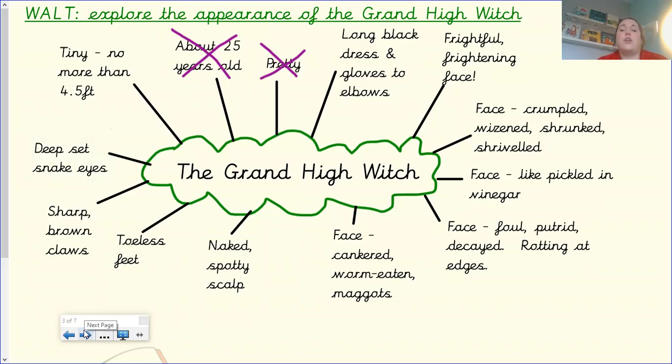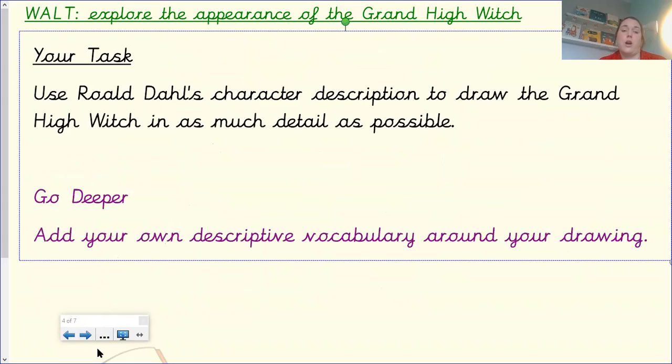So now we have had a good look at the description of our Grand High Witch. Your challenge today, Year 4, is you have got to draw her. So you need to use all of that description to draw the very best picture you can. Okay, so that is your task. Draw the Grand High Witch. Now you can use pencils. You can use felt tip pens. You can use paint. You can use pastels. You can collage. You can do anything you want as long as you represent accurately the appearance of our Grand High Witch. In fact, you can even use something like Play-Doh if you want to and create a Play-Doh witch and just take a photo for your books. It's entirely up to you how you choose to represent that witch.